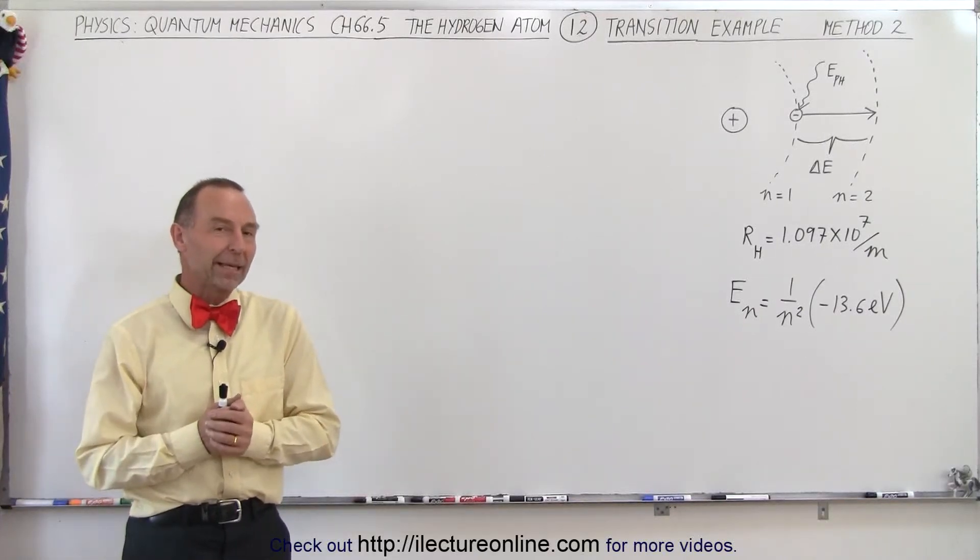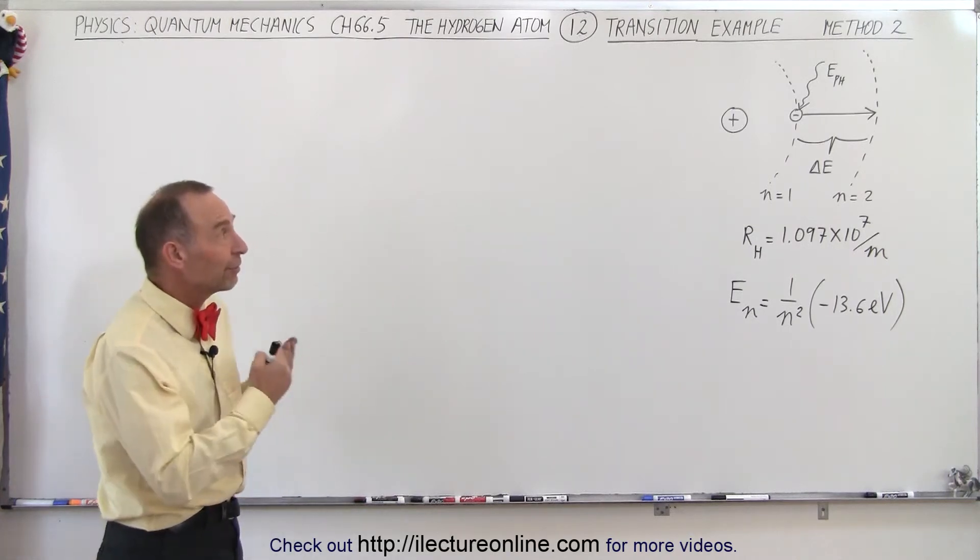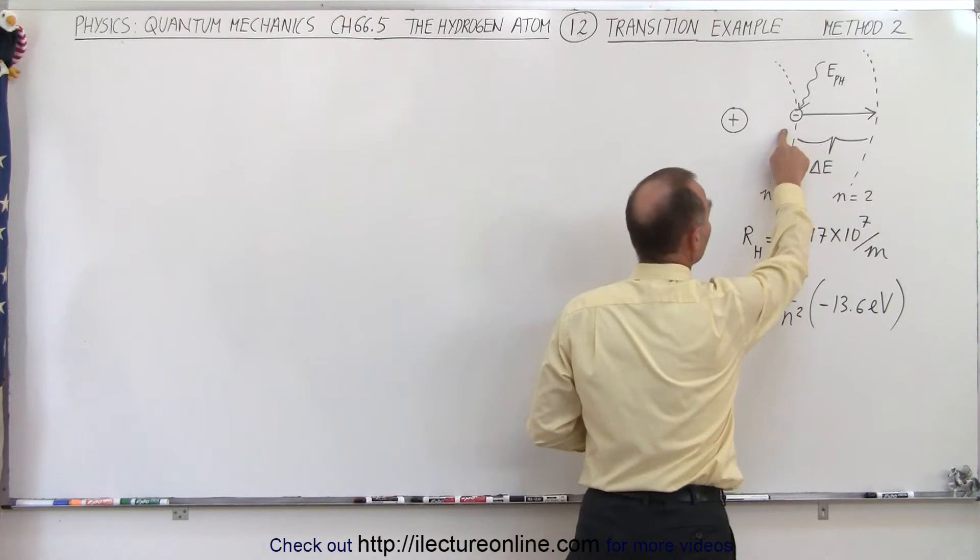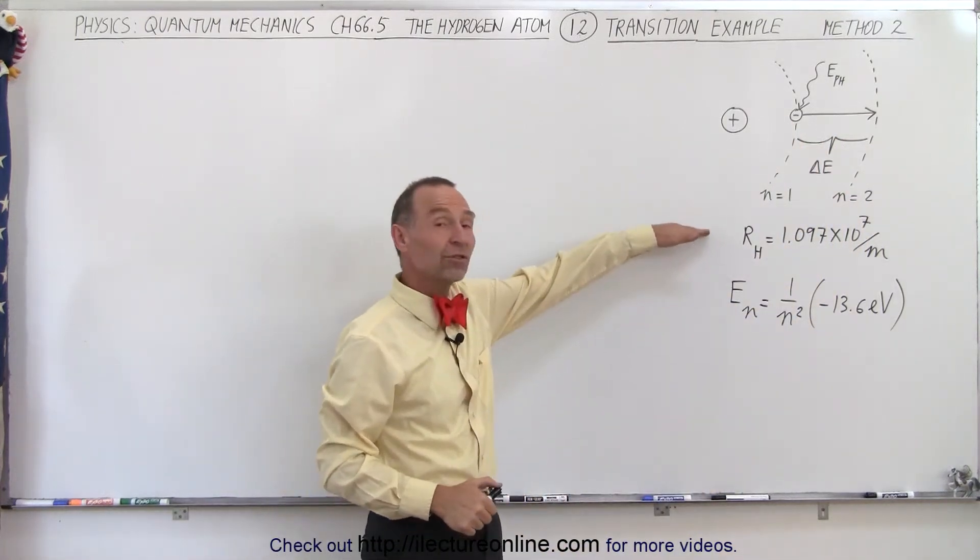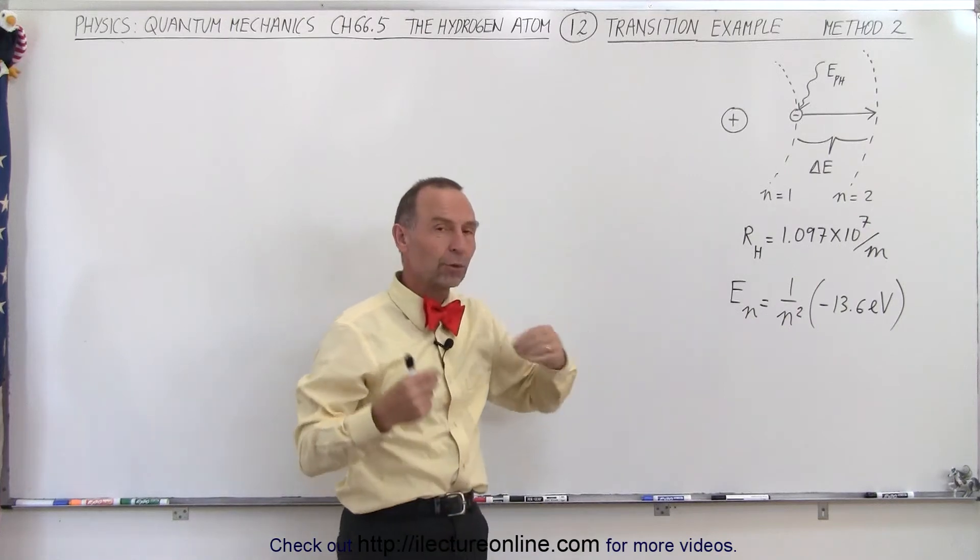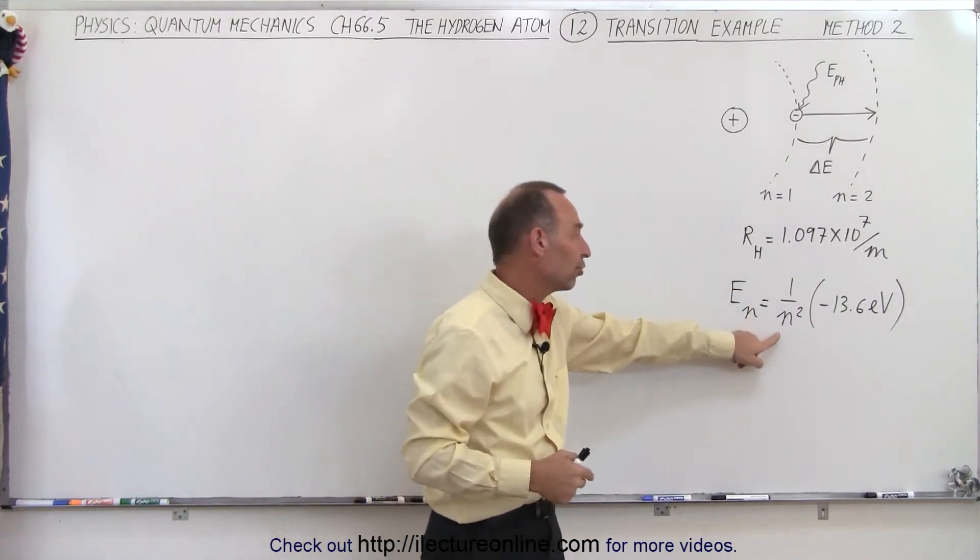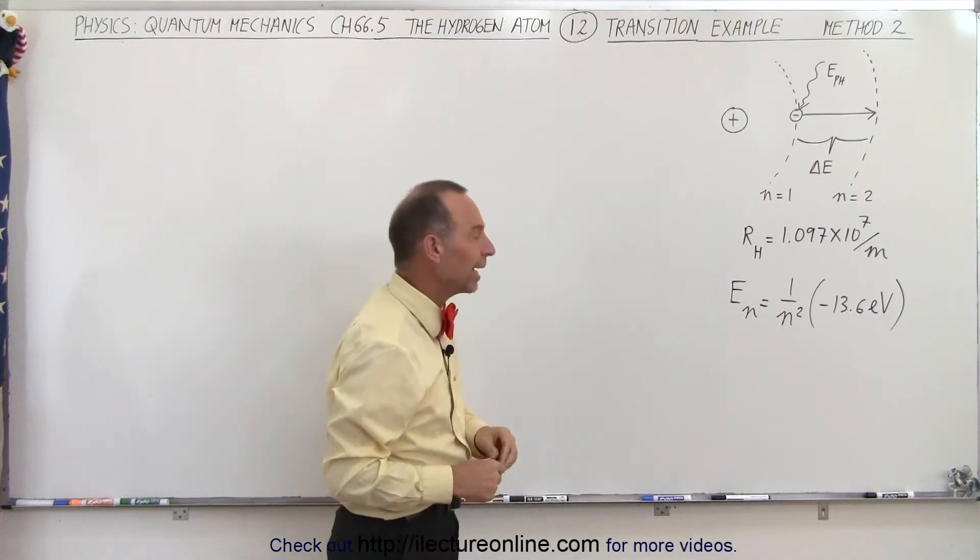Welcome to Electron Line. Here we're going to use a second method to calculate the wavelength of the photon being absorbed when the electron jumps from the first level to the second level in a hydrogen atom. So instead of using the equation that uses the Rydberg constant, we're going to use the concept that the energy of each level is defined as 1 over n squared times minus 13.6 electron volts in a hydrogen atom.